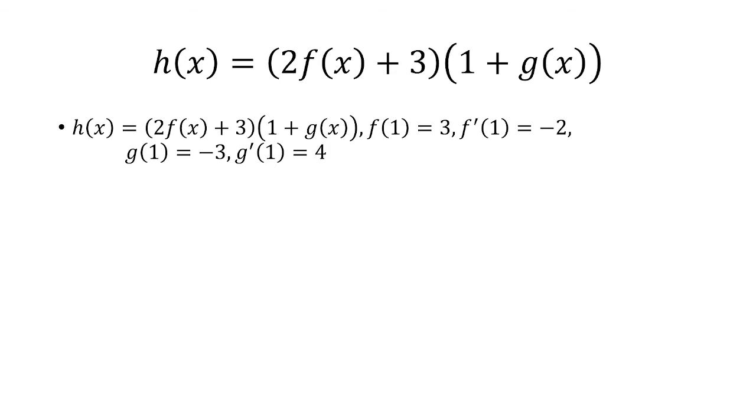We're given that f of 1 is 3, f prime of 1 is negative 2, g of 1 is negative 3, and g prime of 1 is 4.